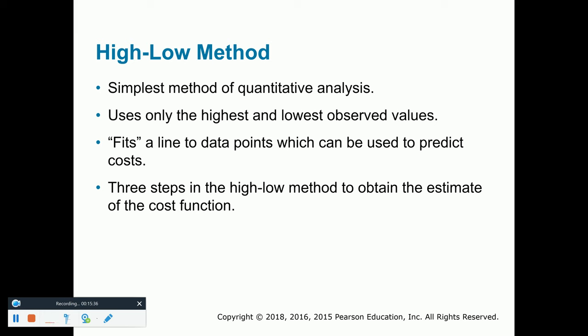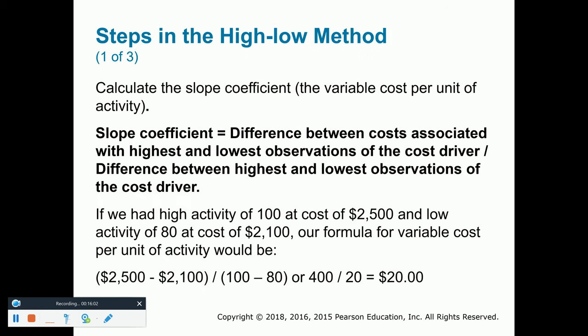For example, let's take indirect labor — which we know is mixed, not exactly fixed and not exactly variable. We're trying to figure out what the fixed piece is and what the variable piece is. If the cost driver for indirect labor is machine hours, that's what makes indirect labor increase or decrease based on machine hours. We take the high machine hours and the low machine hours and compare the two. Let's say at the high activity level we used 100 hours and our total cost was $2,500. At the low level it was 80 machine hours and the total cost is $2,100. We use our formula to figure out the fixed and variable pieces.